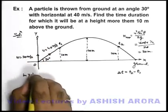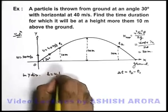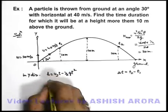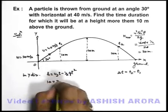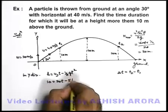So we can say in y direction, if we write the relation h is equal to uyt minus half g t square. You can put h is equal to 10 is equal to 20t minus, if we take g is equal to 10 it is 5t square.